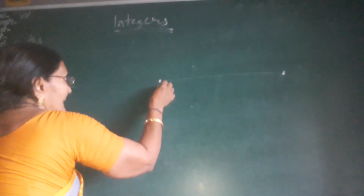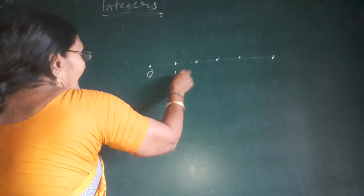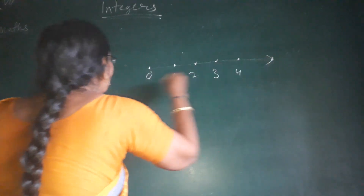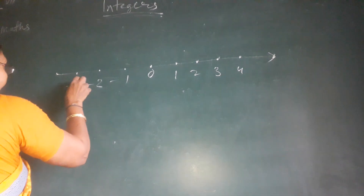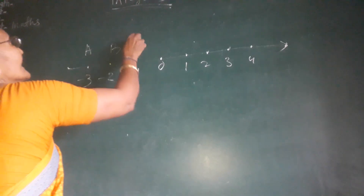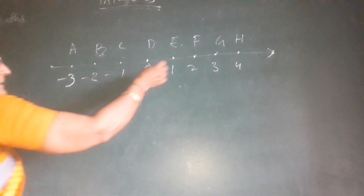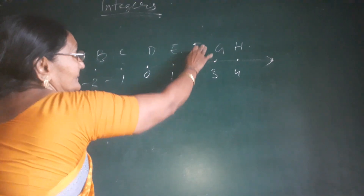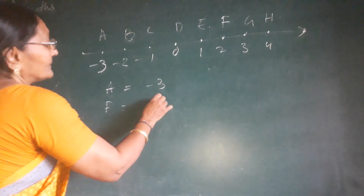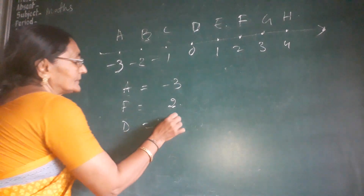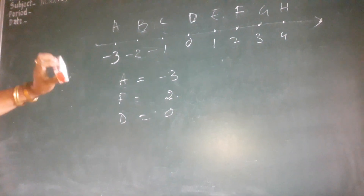First, number nine is there. Here all are positive on the right side, and on the left side negative numbers are there. I am putting labels A, B, C, D, F on the number line. What is A? A is minus three. What is F? F means plus two. Similarly, what does D denote? B is zero. Like that way, we have to find the numbers.